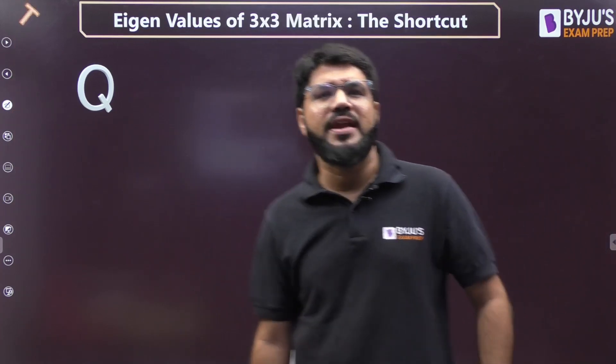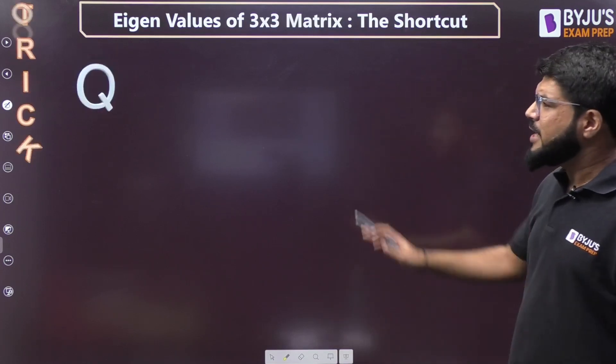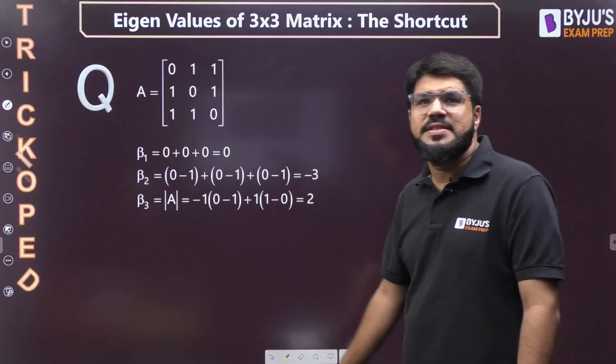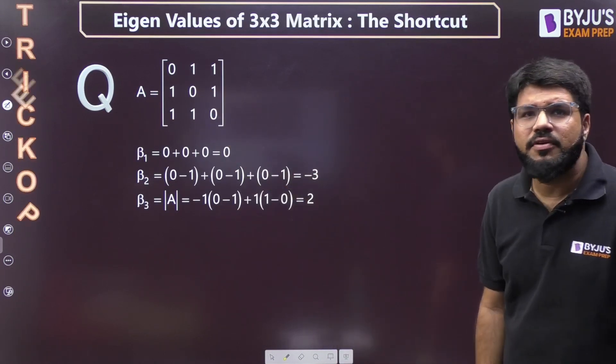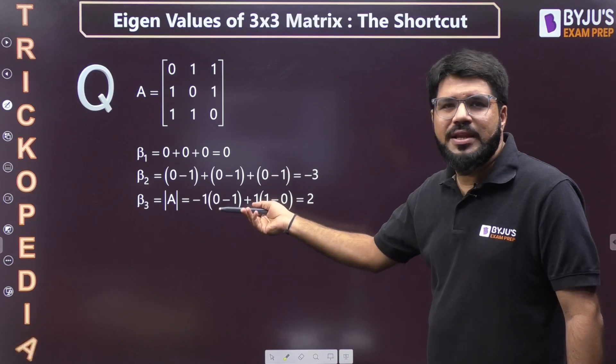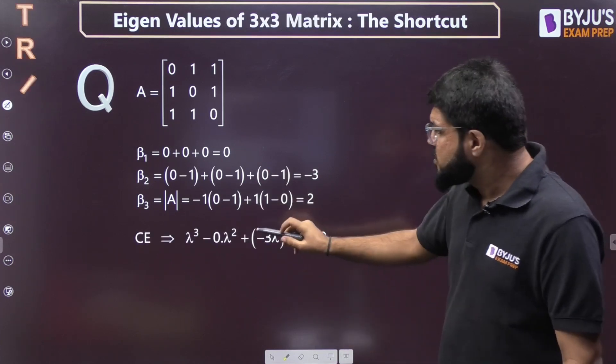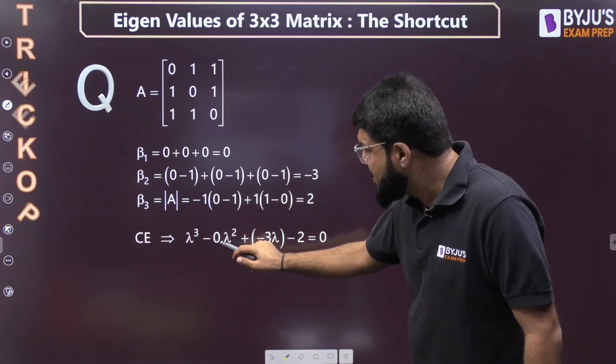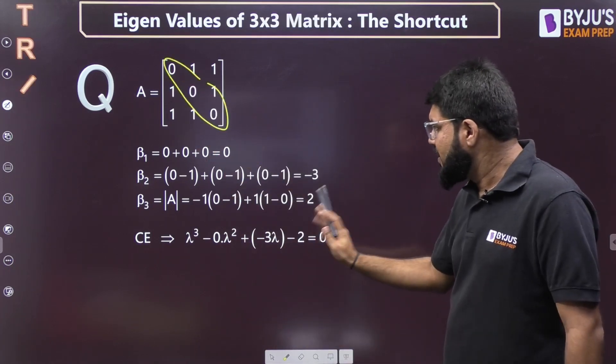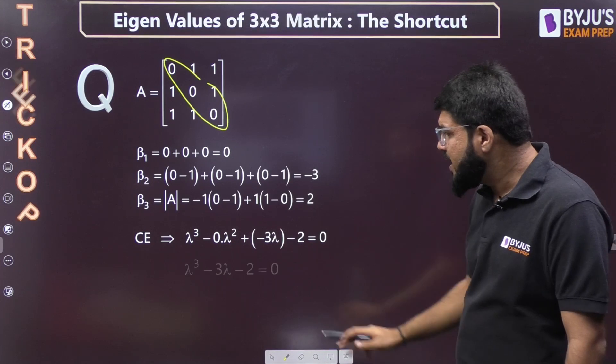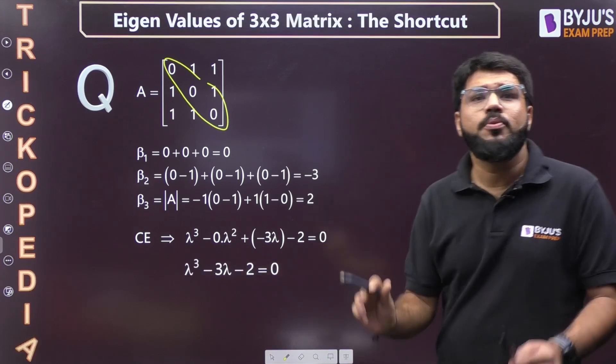It may not always be that the determinant is 0. Given a matrix [0,1,1; 1,0,1; 1,1,0], I have β₁, β₂, β₃ written. You can compute these values. When I substitute, β₁ = 0 (the trace is 0), but β₂ and β₃ have non-zero values. This gives a perfect cubic equation.